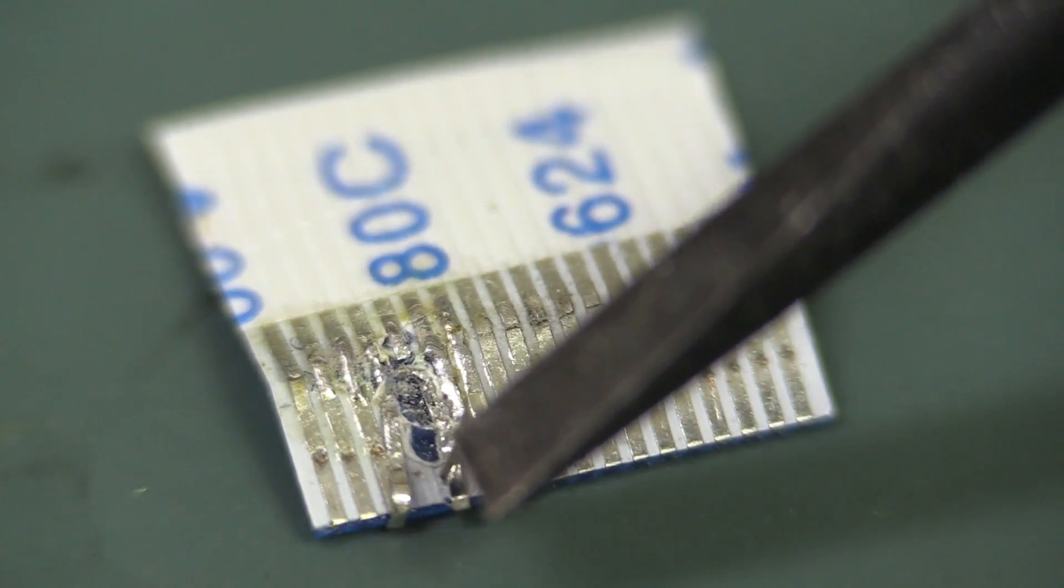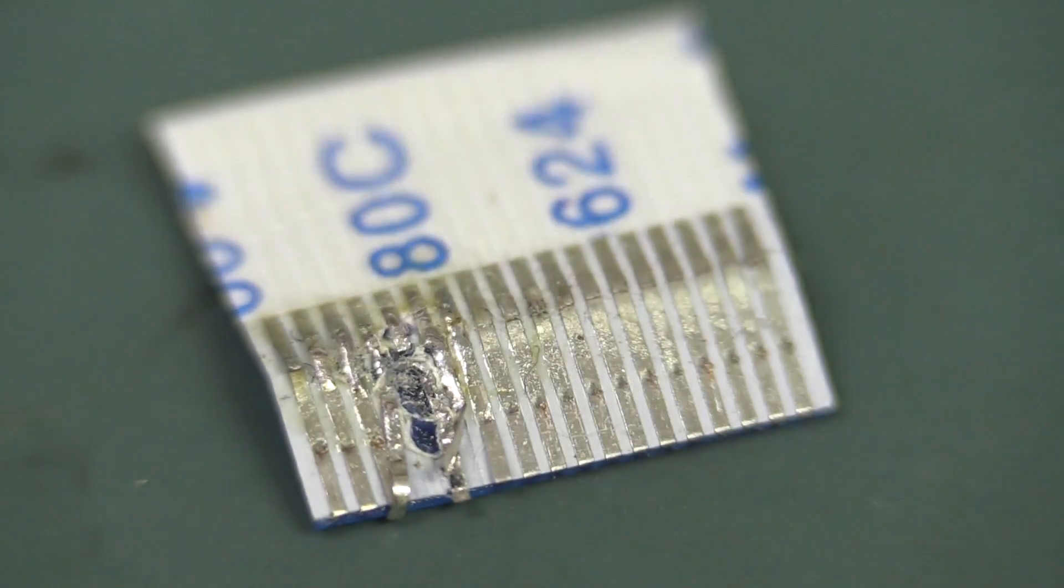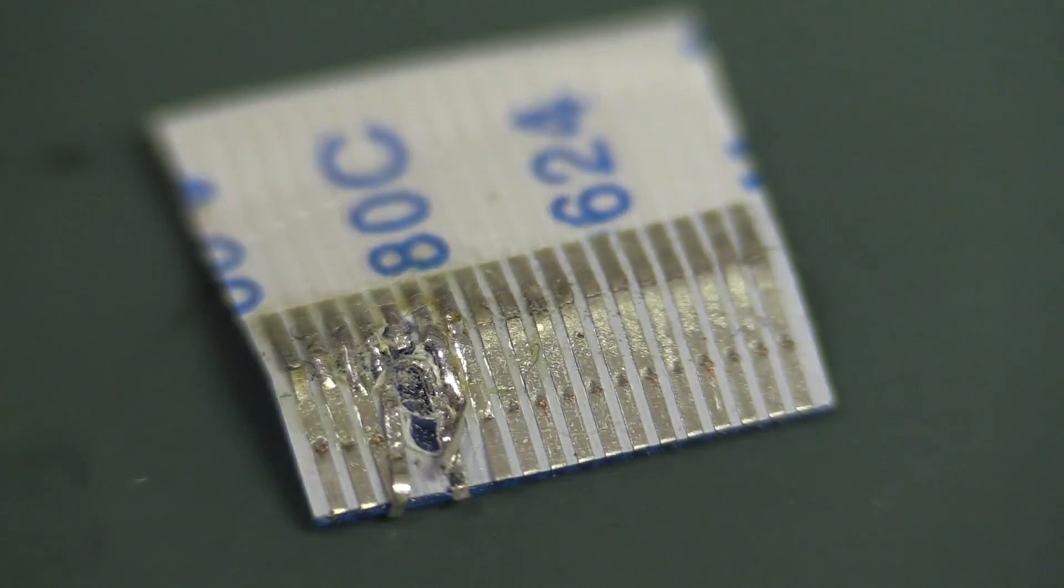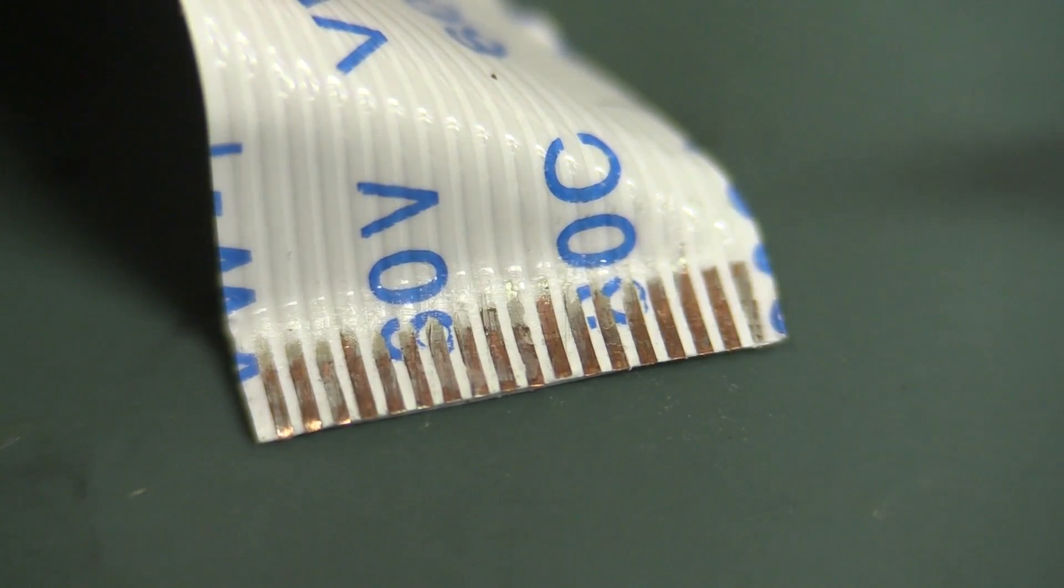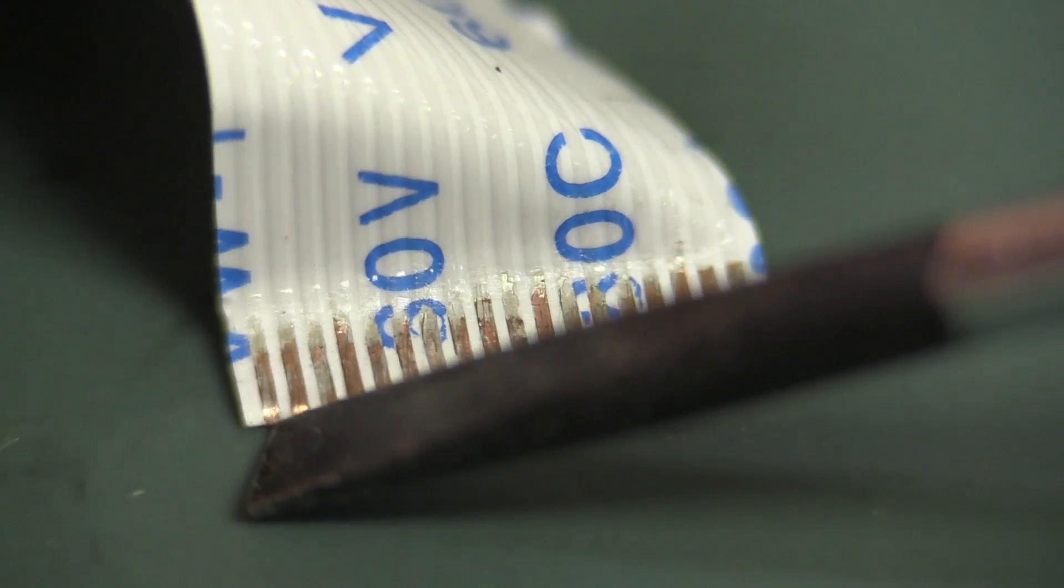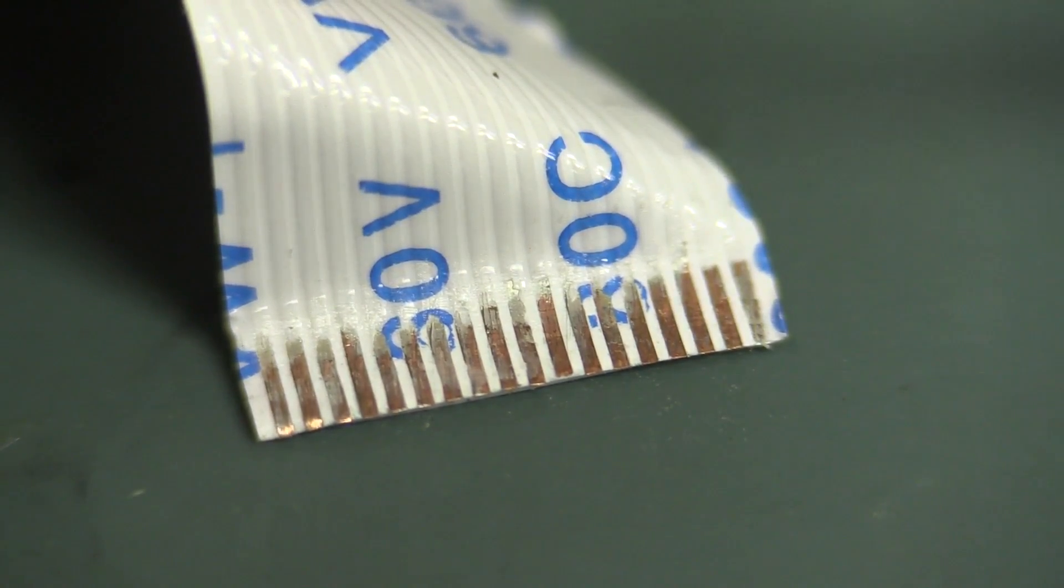But just a little tip with these flat flex cables. If you do get one that breaks, you can just cut it with a pair of scissors like that, assuming you've got the length left. We just had enough length left to cut it across with a pair of scissors.